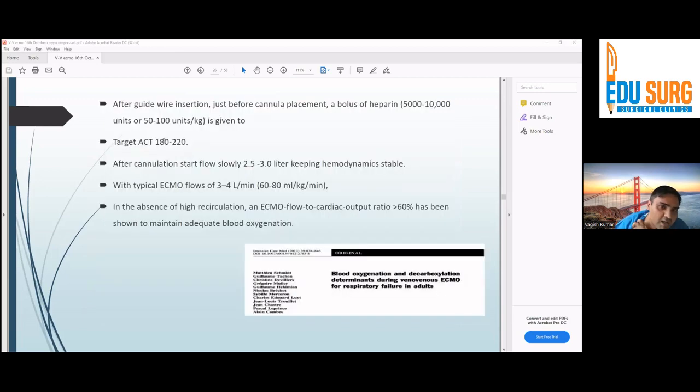This sweep gas should be attached to the membrane from where we are going to give oxygen to the membrane. And then it's going back to the right internal jugular. This is the basic configuration of VV ECMO. After you insert a guide wire, just before cannula placement, a bolus of heparin should be given to target ACT 180-220. It's not mandatory. It depends. If a patient is very coagulopathic, we can avoid this. But normally, our patients are mostly ARDS patients. So after cannulation, we start flow slowly, 2.5 to 3 liters, keeping the patient hemodynamically stable, because if you remove blood very quickly or add blood very quickly, the patient will be very hemodynamically unstable. Then typically increase the ECMO flow to 3 to 4 liters. It should ideally be 60% of your cardiac output.